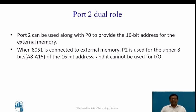First, we will see what is the dual role of Port 2. Port 2 can be used along with P0 to provide a 16-bit address for external memory. In the previous lecture, we saw that P0 carries the lower 8 bits (D0 to D7). Port 2 provides the higher byte, A8 to A15, of the 16-bit address. When connected to external memory, P2 cannot be used for IO programming.